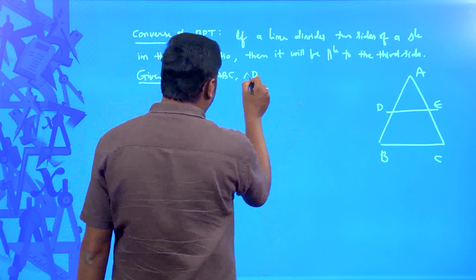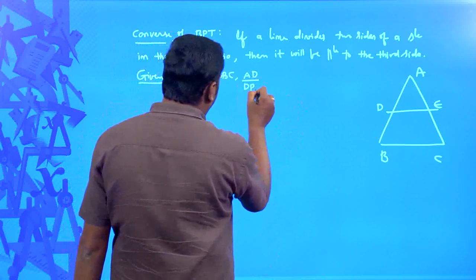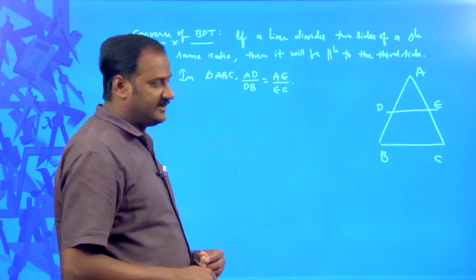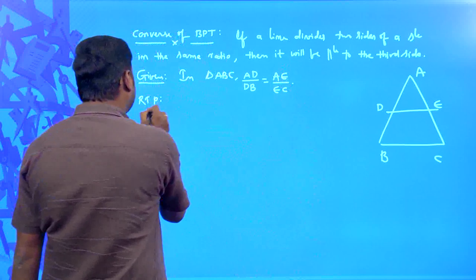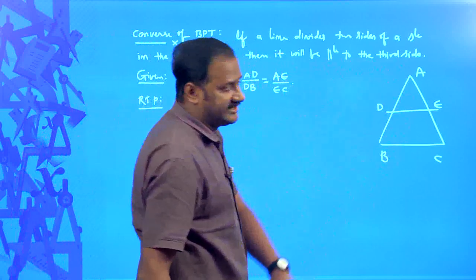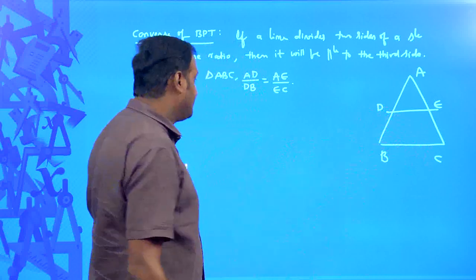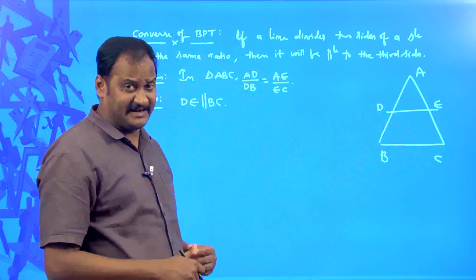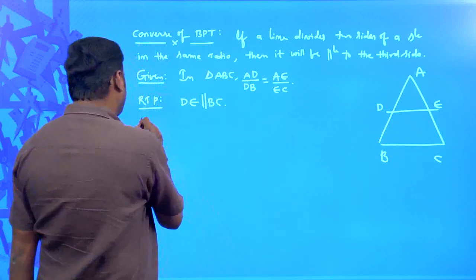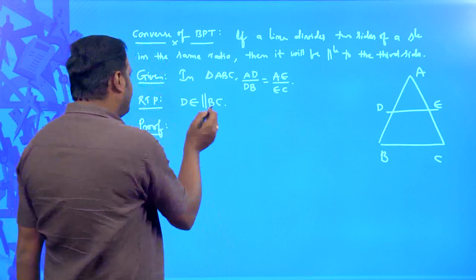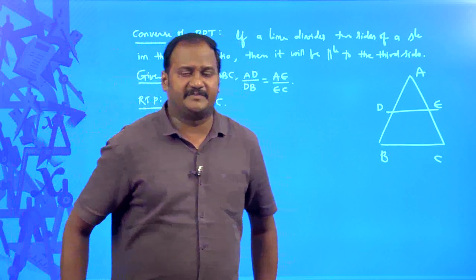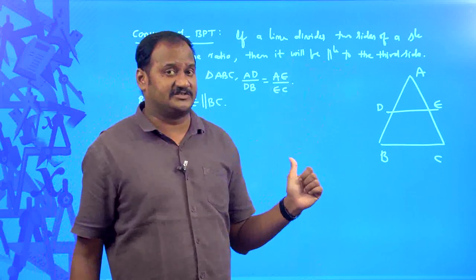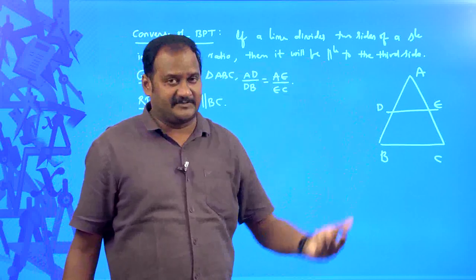What are you going to prove? RTP: it will be parallel to the third side. The third side is BC. So you need to prove that DE is parallel to BC. In order to prove DE parallel to BC, we can use the basic proportionality theorem, because this is the converse of basic proportionality theorem — we already know the fact of basic proportionality theorem, so we can utilize that statement.